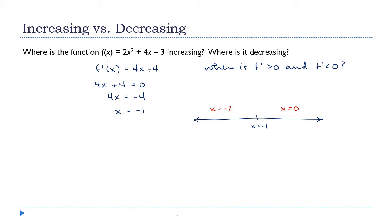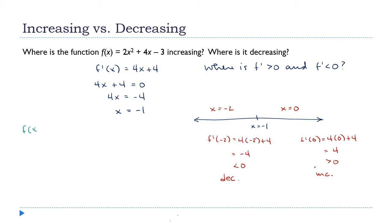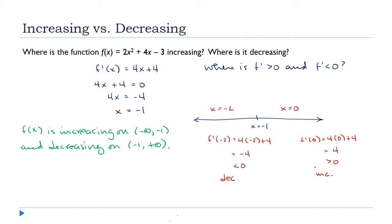Evaluating the derivative at both test points: f'(−2) = 4(−2) + 4 = −4, which is less than zero, so the function is decreasing on that interval. And f'(0) = 4(0) + 4 = 4, which is greater than zero, so the function is increasing on that side. Therefore f(x) is increasing on (−∞, −1) and decreasing on (−1, +∞).